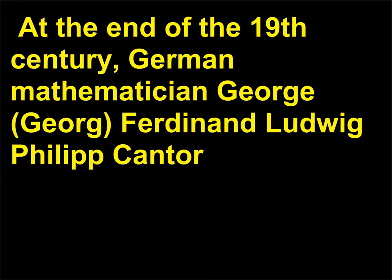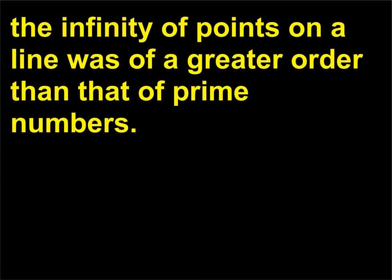At the end of the 19th century, German mathematician Georg Ferdinand Ludwig Philipp Cantor (1845–1918) showed that different orders of infinity existed and that the infinity of points on a line was of a greater order than that of prime numbers.